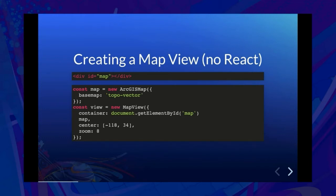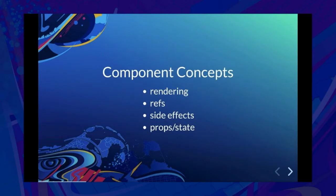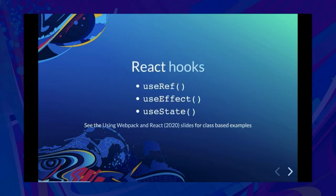We're going to do these same two steps in React. In React, components are responsible for rendering DOM, so we need a component that's going to render that container node. After that node is rendered, we'll need to create the map and view — and in React, this is called a side effect. There are a bunch of component concepts we're going to be touching on today. There are two paradigms for authoring React components: ES6 classes or a set of APIs called hooks. In this talk, we're going to be showing hooks entirely.